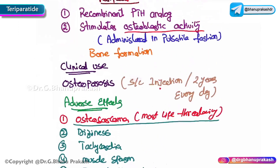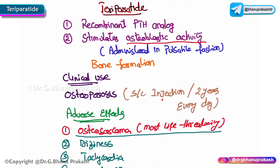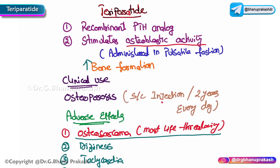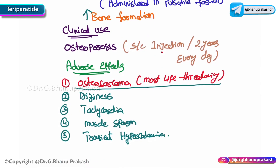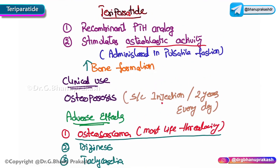As a quick review: teriparatide is a recombinant PTH analog that stimulates osteoblastic activity when administered in a pulsatile fashion, thereby promoting bone formation. It is used for severe osteoporosis via daily subcutaneous injection, with therapy not exceeding two years due to adverse effects. The most life-threatening adverse effect is osteosarcoma, with others including dizziness after the first dose, tachycardia, muscle spasm, and transient hypercalcemia.